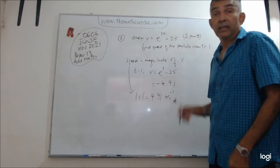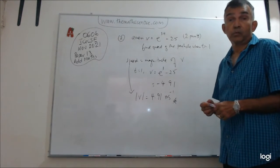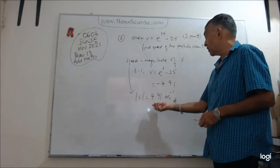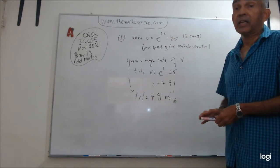Remember speed. Speed is not a vector quantity. Speed is a scalar quantity. So just write down 4.91 meter per second and we are done.